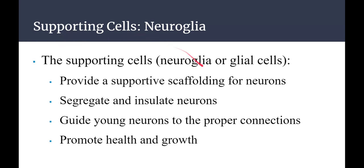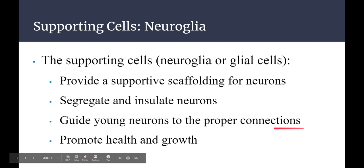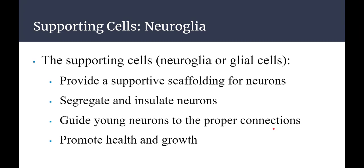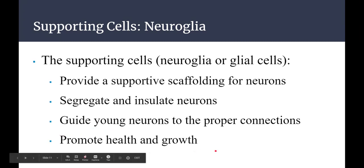The supporting cells are the neuroglia or glial cells. Glia means glue — it's the stuff that holds everything together in the nervous system. These supporting cells provide supportive scaffolding, segregate and isolate neurons, guide young neurons to proper connections, and promote health and growth throughout the nervous system.